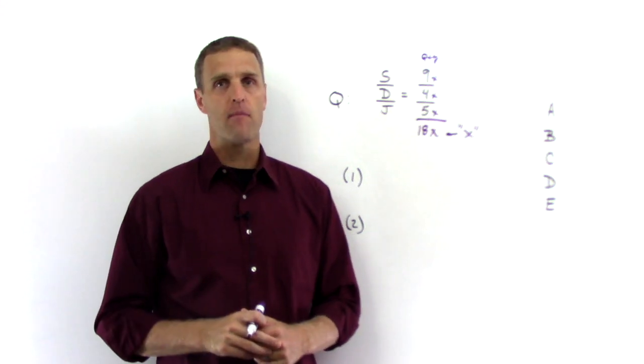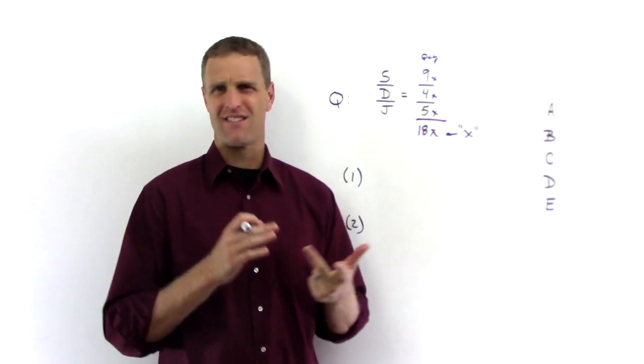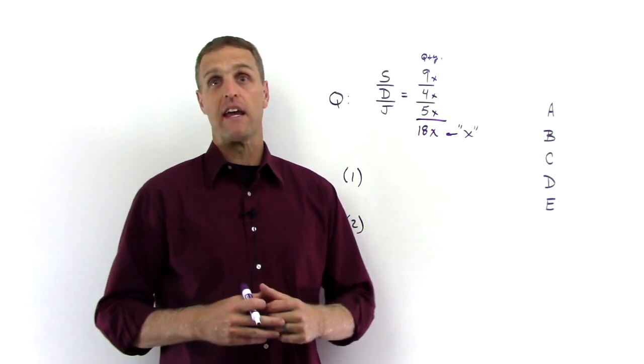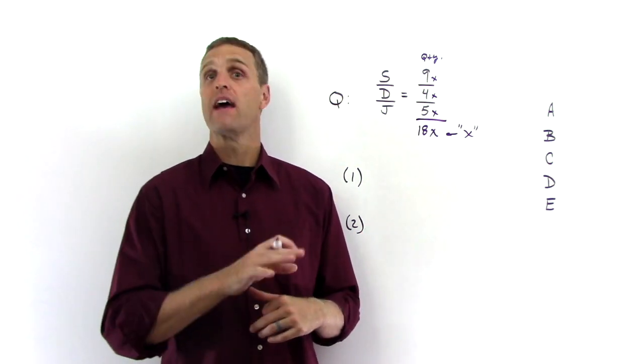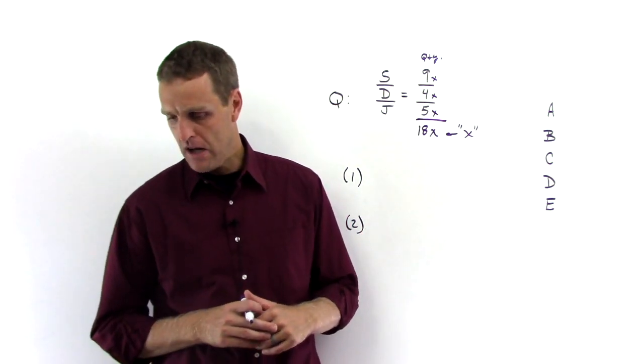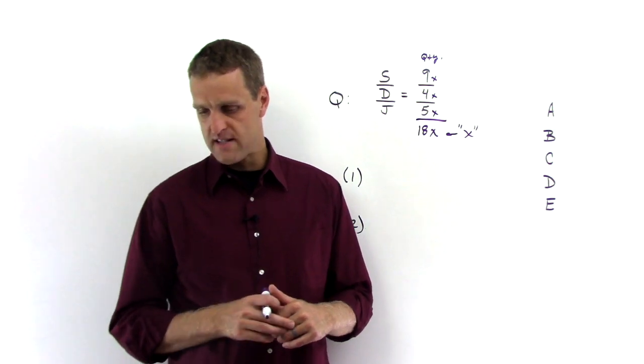And another key thing to remember is, because we're dealing with things like jackets and dresses, we're dealing with integers. You can't have a half of a jacket or something. So we are dealing with integers. So for example, when it says that there are more than seven dresses...